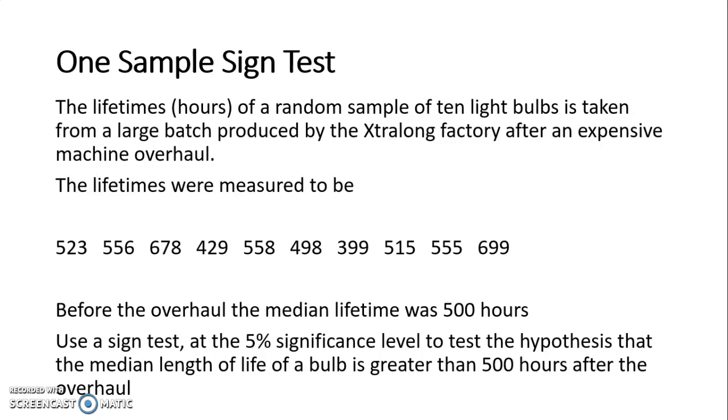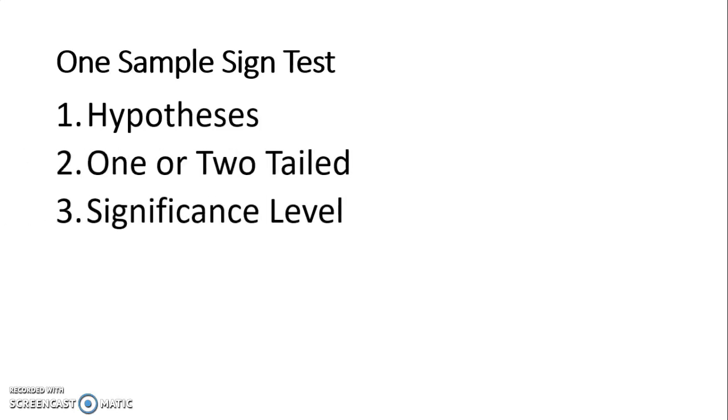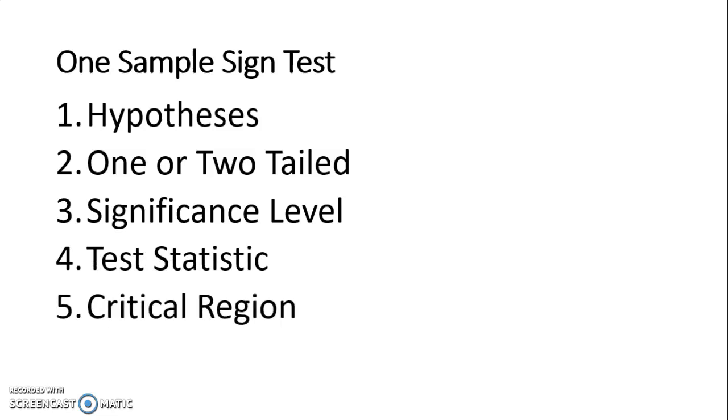So this question is specifying for us to use a sign test. We have been given one set of data and a previous median value to compare it to, 500 hours. With any hypothesis test, we follow our six steps: write out our hypotheses, state if it is one or two tailed and the significance level, calculate the test statistic, find the critical region, and compare and conclude.